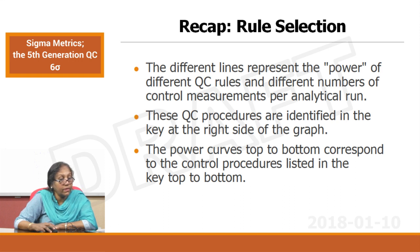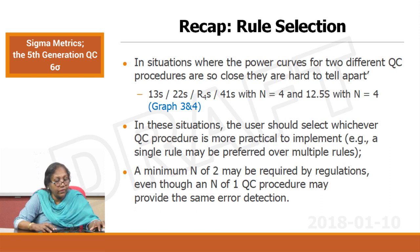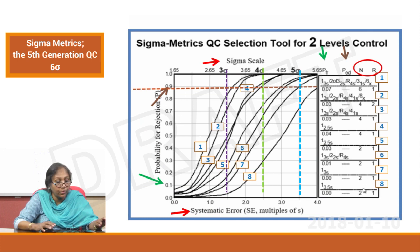To recap about rule selection: different lines represent the power of the different QC rules and the different numbers of control measurements per analytical run. These QC procedures are identified in the key at the right side. The power curves from top to bottom correspond to the control procedures listed top to bottom. In situations where the power curves for two different QC procedures are very close — as in graphs 3 and 4 — the user should select whichever QC procedure is more practical to implement. A single rule may be preferred over a multiple rule if you are able to monitor it adequately. A minimum N of 2 may be required by regulations even though an N of 1 QC procedure may provide the same error detection.